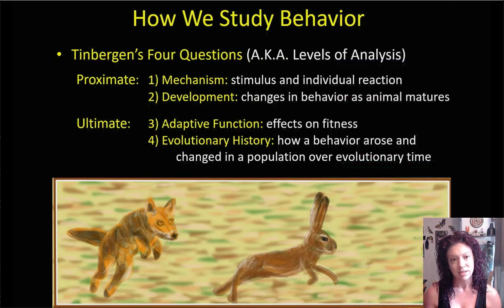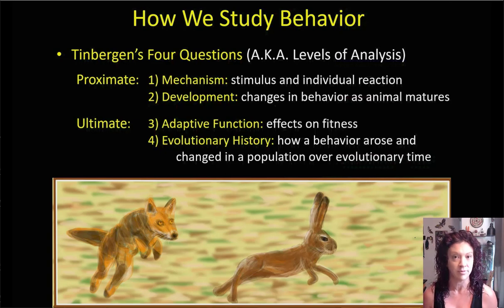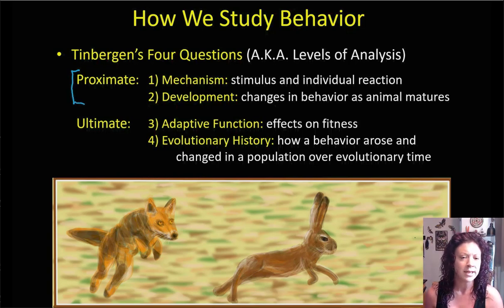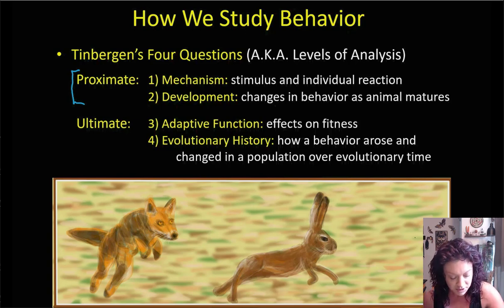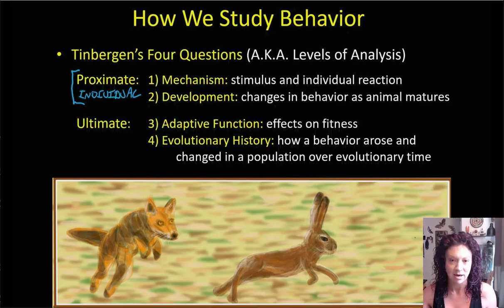We can break down Tinbergen's levels of analysis not only into proximate and ultimate causes, but also into the specific types of each. Proximate causes can be broken down into either mechanisms or development. The key is that proximate causes affect the individual — that particular animal. What's causing them to behave in the way that they do?